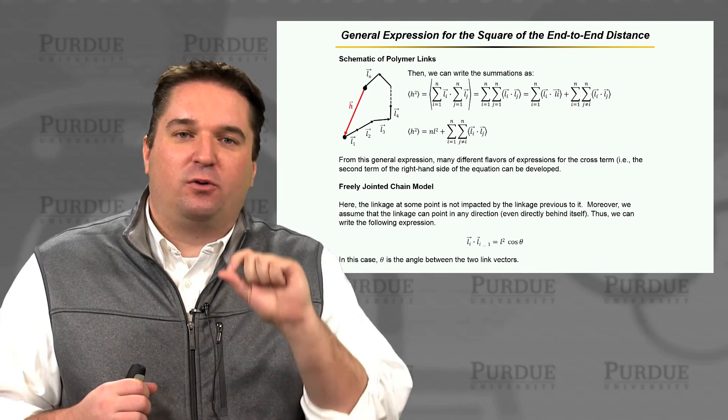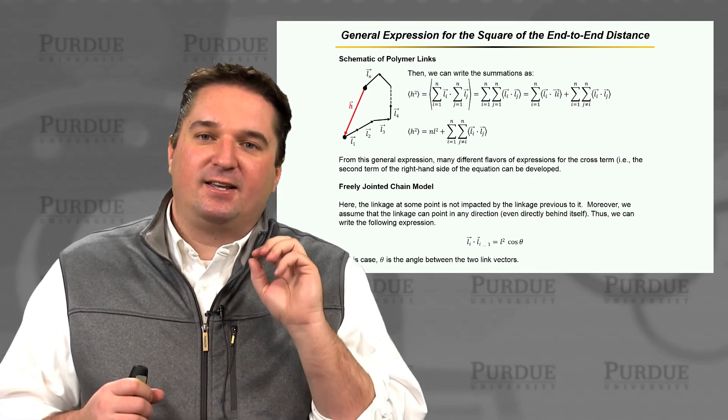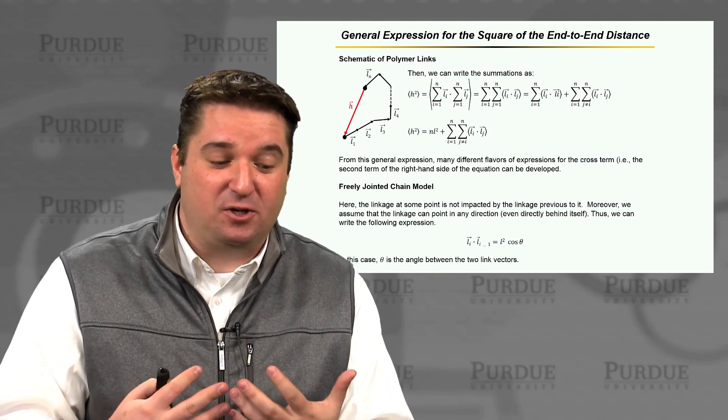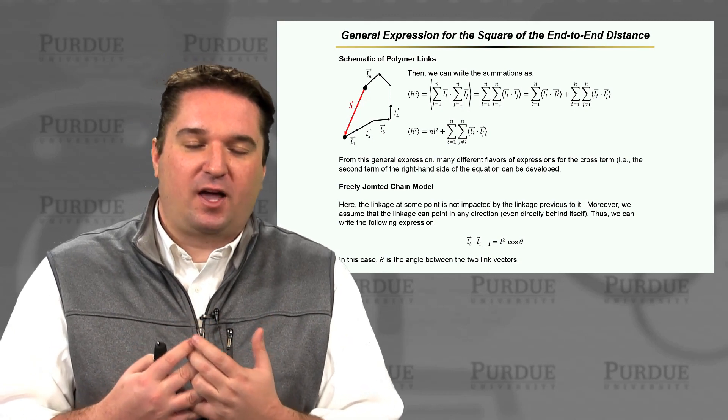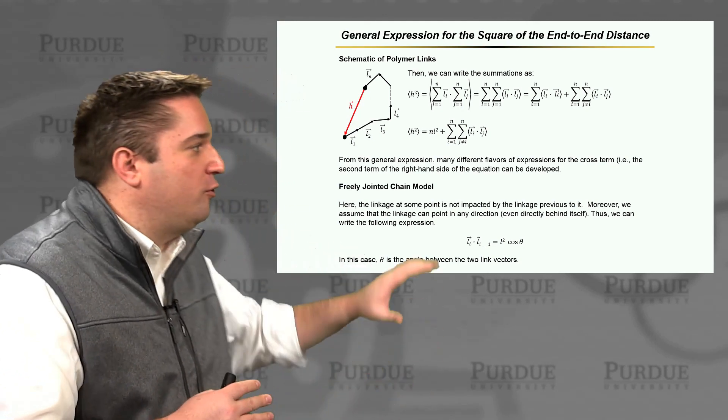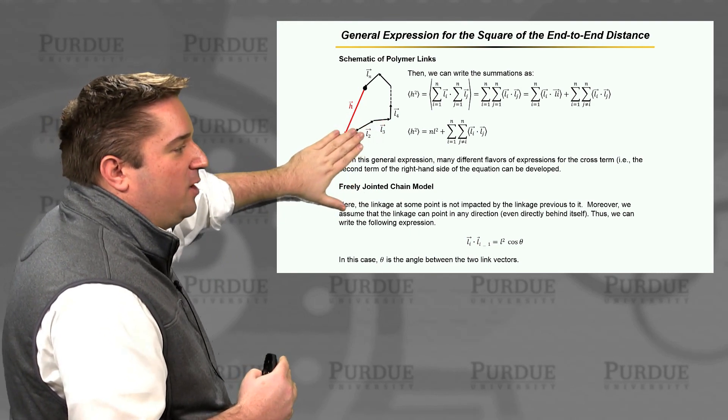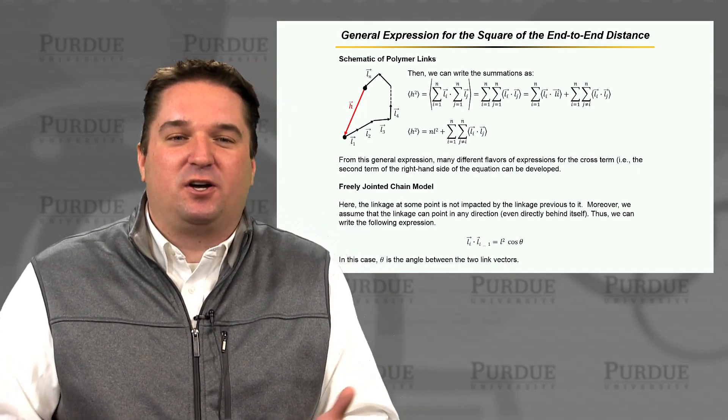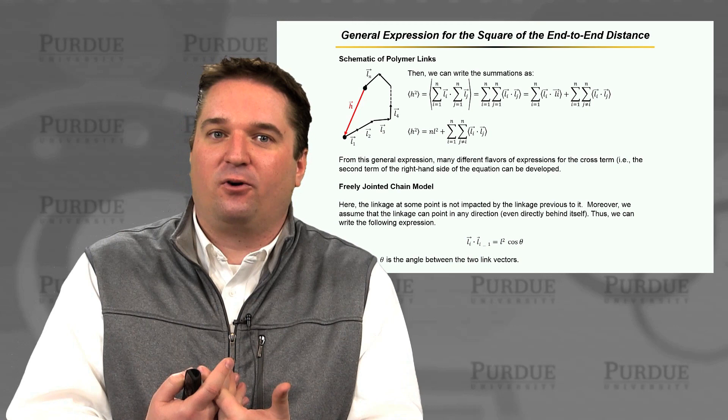And the first one we'll talk about is what we'll call the freely jointed chain model. And here we have a very specific, and it's very unrealistic to be quite honest, way to think about how these chains behave. And that says that these chains can move in any single direction we want. So L2 can move any which way it wants from L1. Obviously, this isn't so physically realistic because there's real chemical bonds in real polymers. But let's just stick with this model for right now.